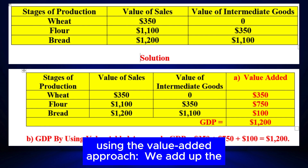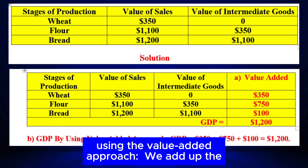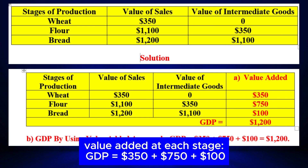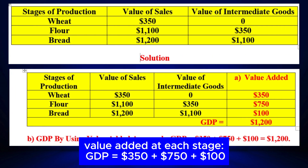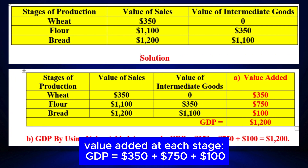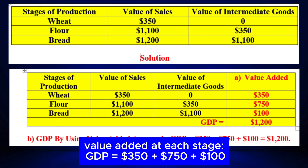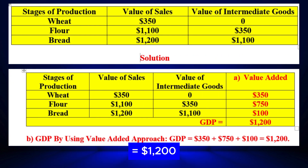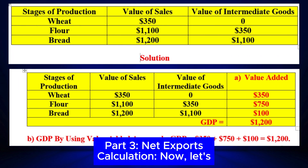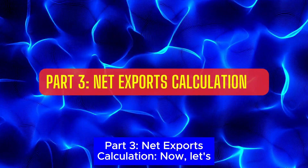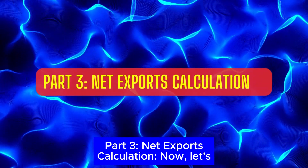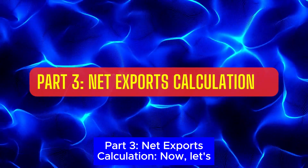Now to calculate the total GDP using the value added approach, we add up the value added at each stage. GDP equals $350 plus $750 plus $100 equals $1,200.